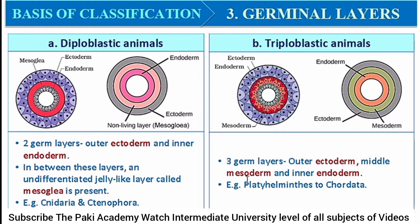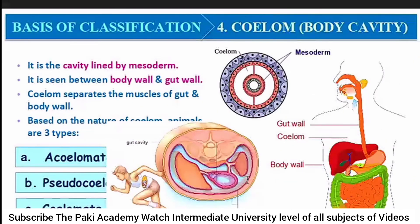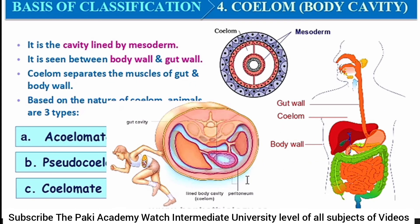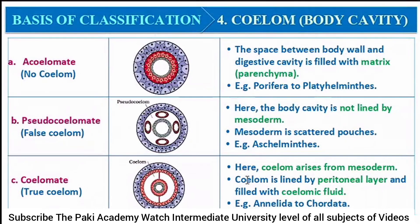Coelom is the body cavity of animals — it describes how their body parts are arranged. It is the cavity lined by mesoderm, seen between the body wall and gut wall, and it separates the muscles of the gut and body wall. There are three types: acoelomate, pseudocoelomate, and coelomate. In acoelomates, animals do not possess a body cavity — the space between the body wall and digestive cavity is filled with a matrix called parenchyma.